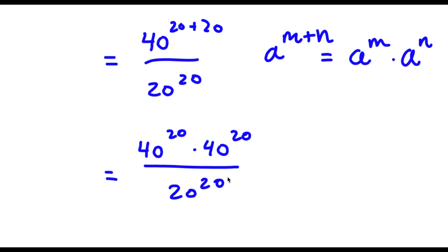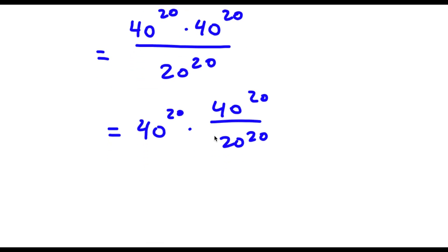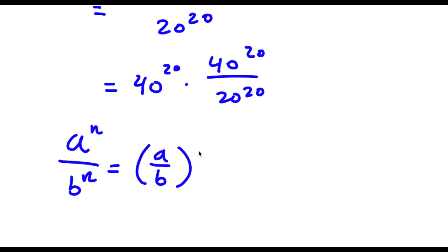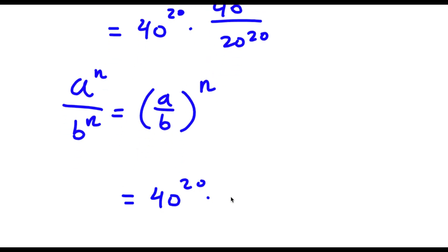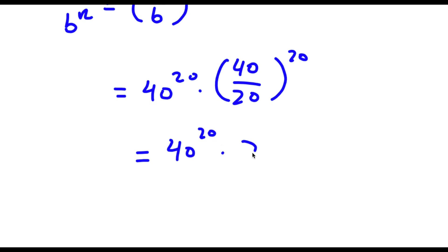And now I have this over 20 to the power of 20. So I can rewrite this as 40 to the power of 20 times 40 to the power of 20 over 20 to the power of 20. Now if I have something in the form a to the power of n over b to the power of n, this is equal to a over b to the power of n. So in this case, I have 40 to the power of 20 over 20 to the power of 20, and I can rewrite this as 40 over 20 to the power of 20. Now 40 over 20 is simply equal to 2. So now I have 40 to the power of 20 times 2 to the power of 20.